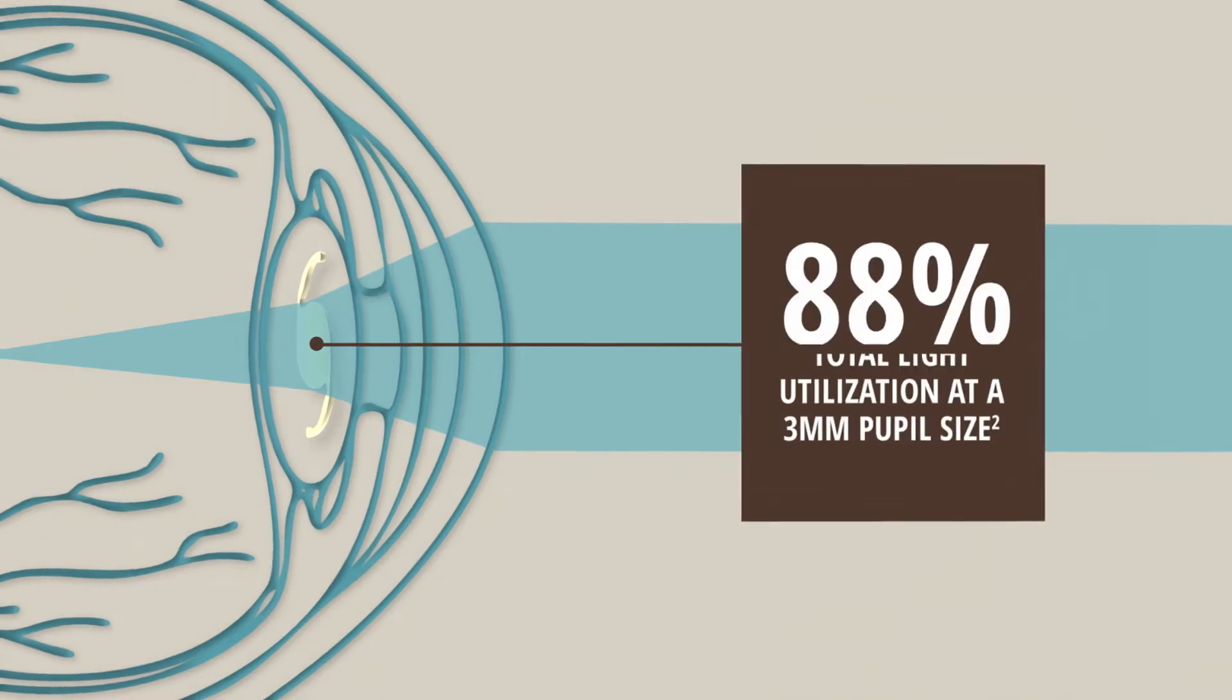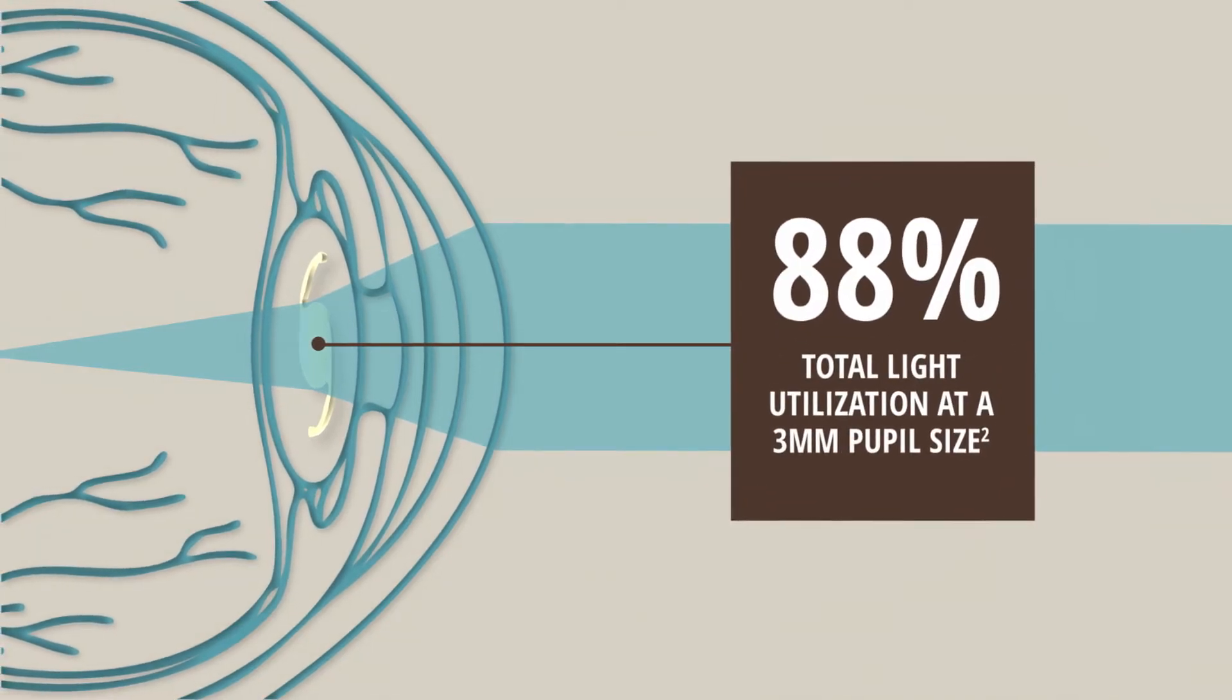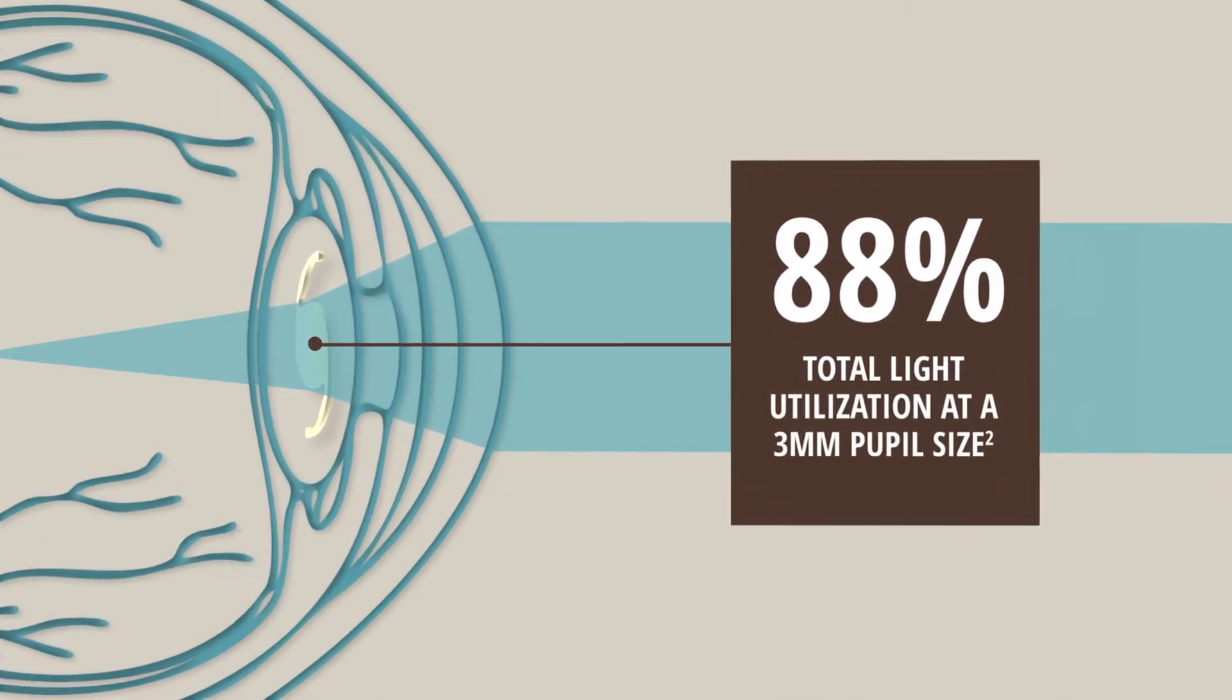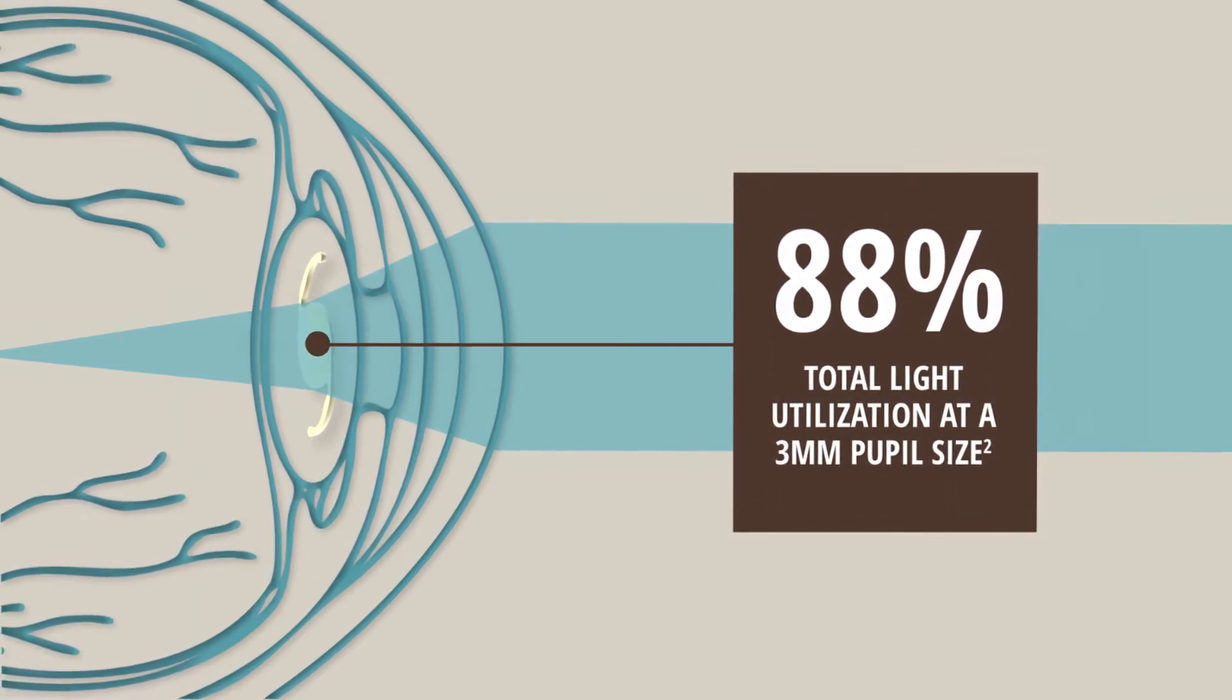The unique diffractive structure allows the lens to transmit 88% of light to the retina at a 3 mm pupil size for exceptionally high light utilization.